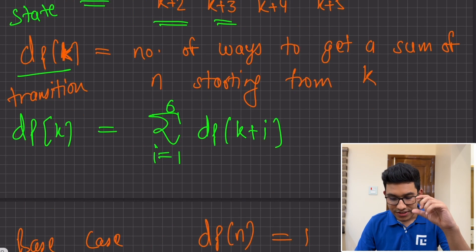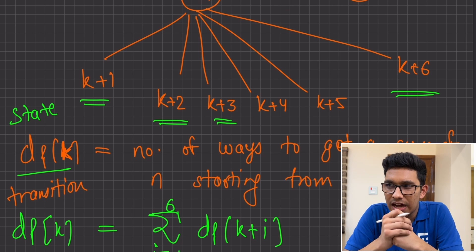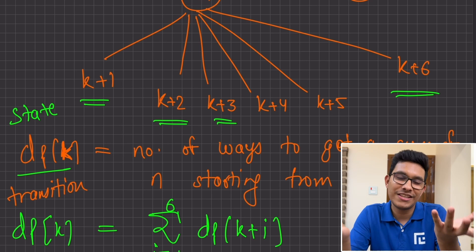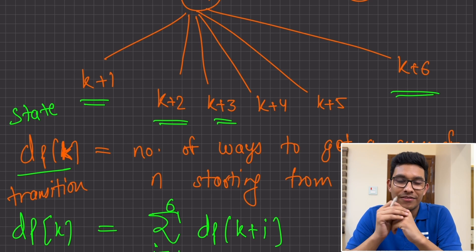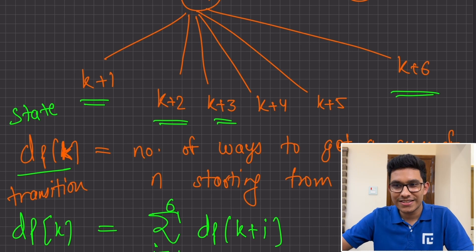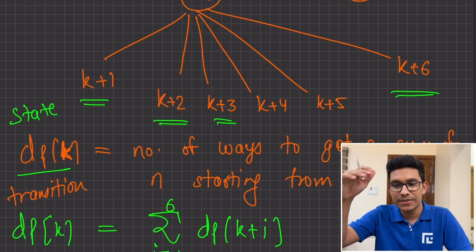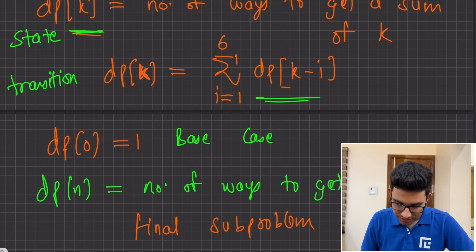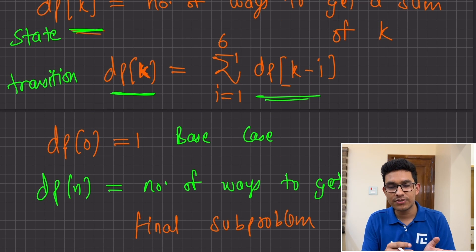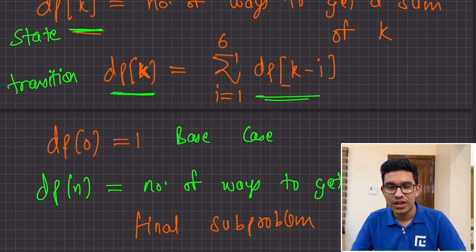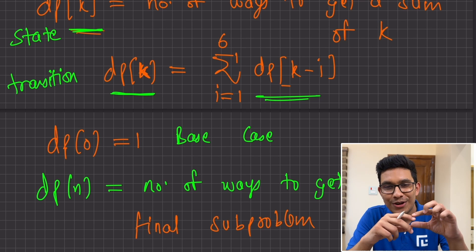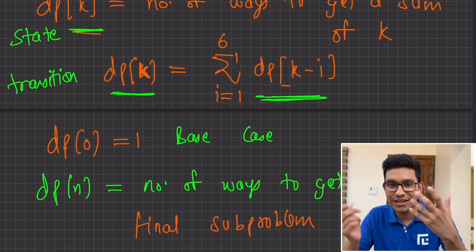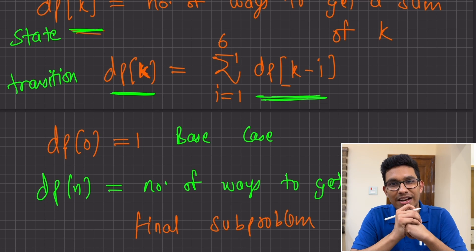We have discussed two ways to solve this same problem, but we never discussed how to code it iteratively or recursively, or how to memoize these things. Why? Because what is important is how you break the bigger sub-problem into smaller sub-problems. The code is pretty straightforward. dp of k depends on dp of k-1, k-2, so on up till k-6. So if you already have the values of dp of k-1 through k-6, you can get dp of k.